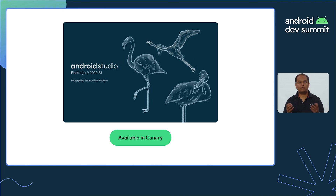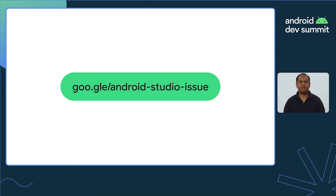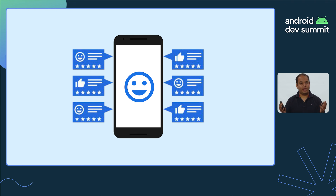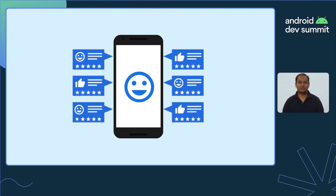All of these new features in App Quality Insights are available today in the Canary channel with Android Studio Flamingo. As always, your feedback helps us create the best developer tools for you. So please try out App Quality Insights today by downloading the latest version of Android Studio. We cannot wait to see how you use App Quality Insights in Android Studio to build amazing, crash-free apps that delight your users. Thank you.